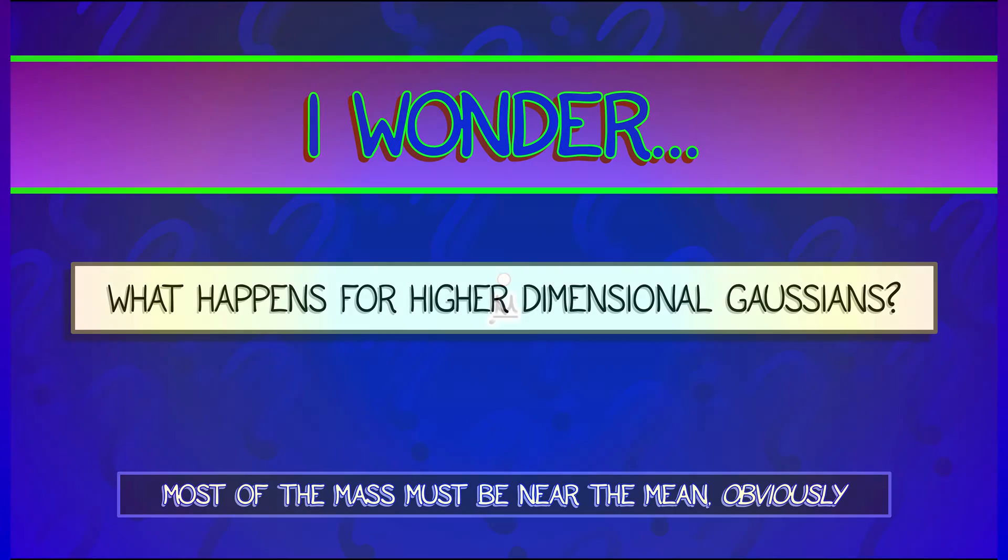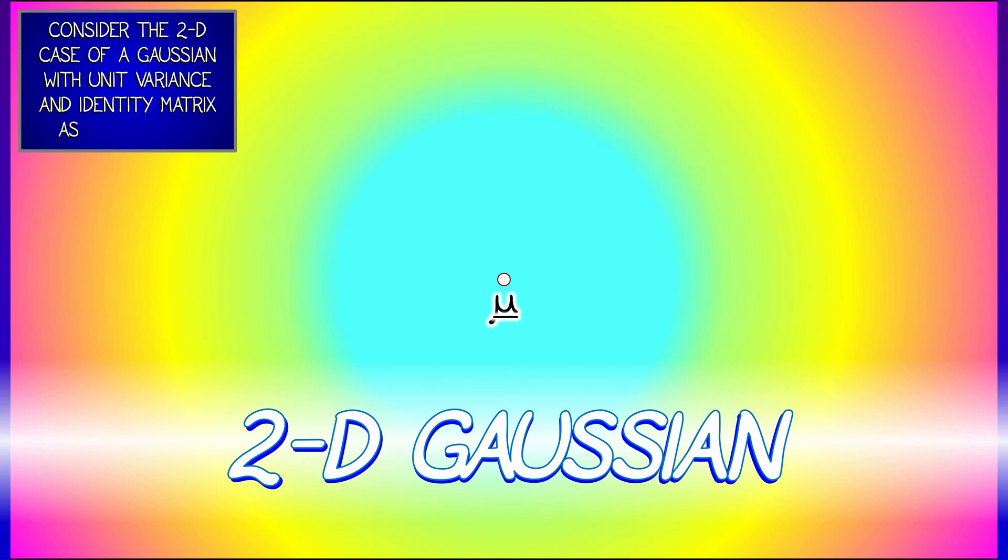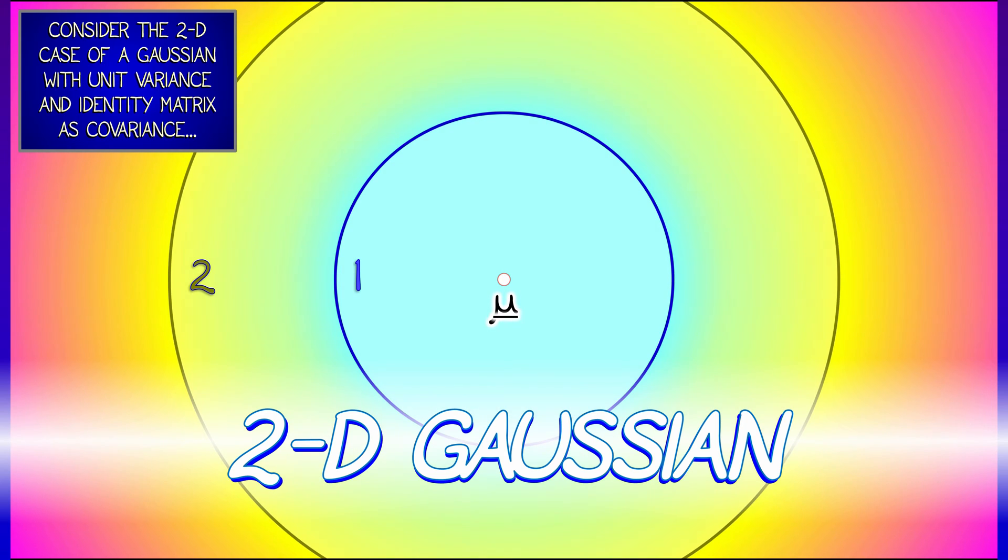Let's look at a two-dimensional Gaussian. You've got a mean. Let's say we have standard deviation equal to one with the simplest possible variance. Let's just take the identity matrix as the covariance matrix. And then I'm going to look at regions within one standard deviation or two standard deviations or three standard deviations.